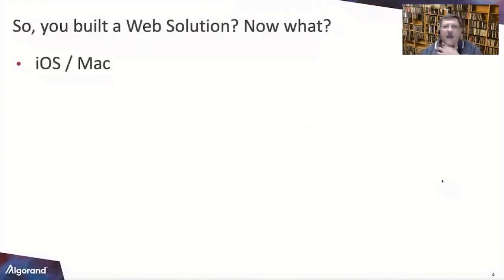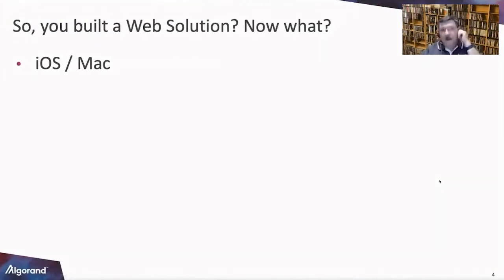So here we go. We've got some great content tonight on building with Xamarin and C# applications for Algorand solutions in mobile apps. So you built the web solution — now what? When you're building solutions, you've got to do the end-to-end thing. What about iOS, Android, Windows, UWP, desktop, tablet? Do I do this natively?